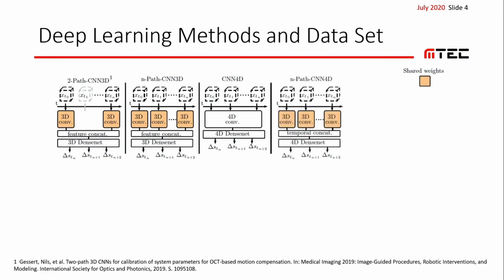Fourth, we use a mixed 3D-4D approach and combine 4D convolutions with a multipath approach. First, we split the input sequence and use a multipath 3D CNN to individually process each volume of the sequence. Then we reassemble the temporal dimension by concatenating the outputs into a temporal dimension, and afterwards employ our DenseNet 4D baseline block.